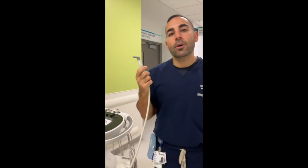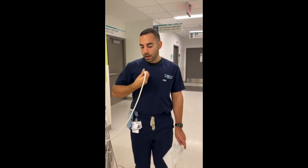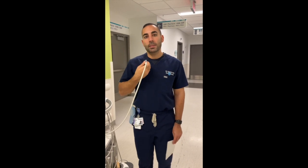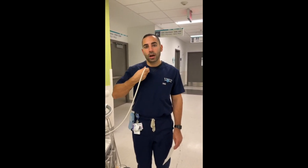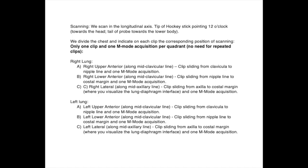Before I showcase on our patient Florence, you want to have the probe pointing towards 12 o'clock — upward. You want to do the three quadrants on each side, so if you're imaging the right chest, you do the upper, then the lower, then the lateral quadrants. Here is the entire protocol: we scan in the longitudinal axis with the tip of the hockey stick pointing to 12 o'clock towards the head. We divide the chest and indicate on each clip the corresponding position of scanning, with only one clip per lung zone and one M-mode per lung zone — no repeated clips needed.